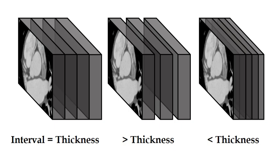The first image is an example of when the interval is equal to the slice thickness. This means where one slice ends, the next slice begins — there's no overlapping in the reconstructed data and no spaces between the reconstructed data. However, we can also add a gap between the slices, and this is what happens in the second image when the slice interval is greater than the slice thickness, resulting in a space.